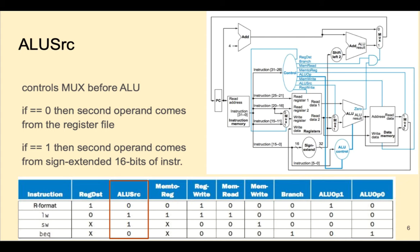For a load word or store word, the second operand comes from the sign-extended lower 16-bit immediate field of the instruction. Notice the arrow is pointing to one, and the table also shows one as a control signal.